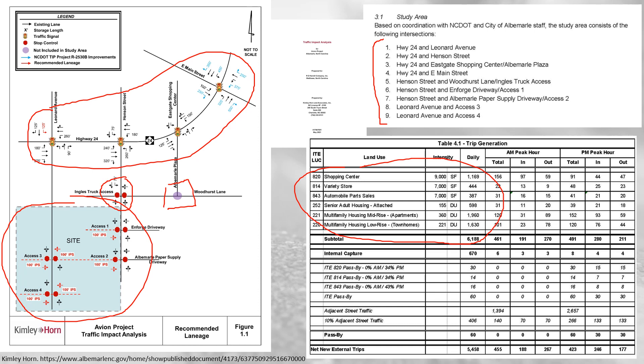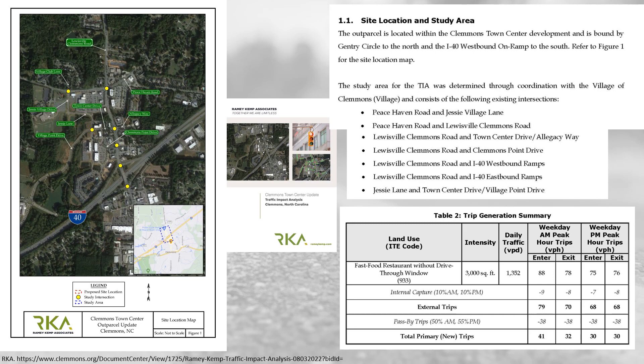Another example is a fast food restaurant without a drive-through window. The project site is shown, and the associated intersections specifically being studied are shown in yellow — that is the geographic scope for this particular TIA. An important thing to check when reviewing a traffic impact analysis is whether all relevant intersections that could possibly be impacted are included in the evaluation.